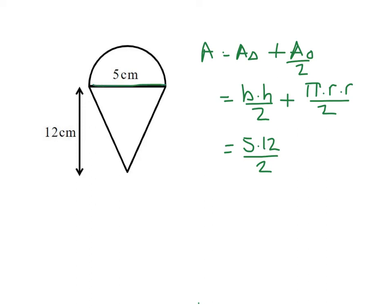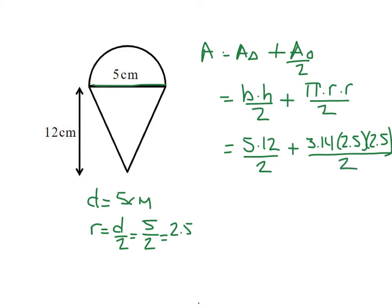So my diameter is 5 centimeters. I need for my formula radius, not diameter. So I know radius is equal to my diameter divided by 2. And if my diameter is 5, 5 divided by 2 would be 2.5. So I have to add 3.14 times 2.5 times 2.5. And then I divide by 2 to get my semicircle.